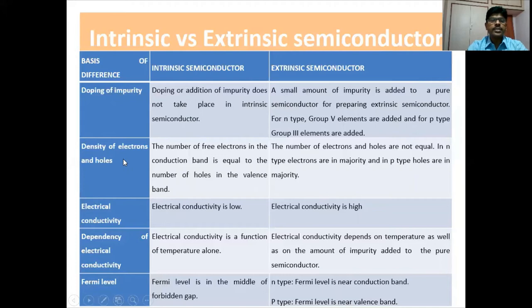In terms of density of electrons and holes, in intrinsic semiconductors, the number of free electrons in the conduction band is equal to the number of holes in the valence band. In the case of extrinsic semiconductors, the number of electrons and holes are not equal. In N-type, electrons are in majority, and in P-type, holes are in majority.